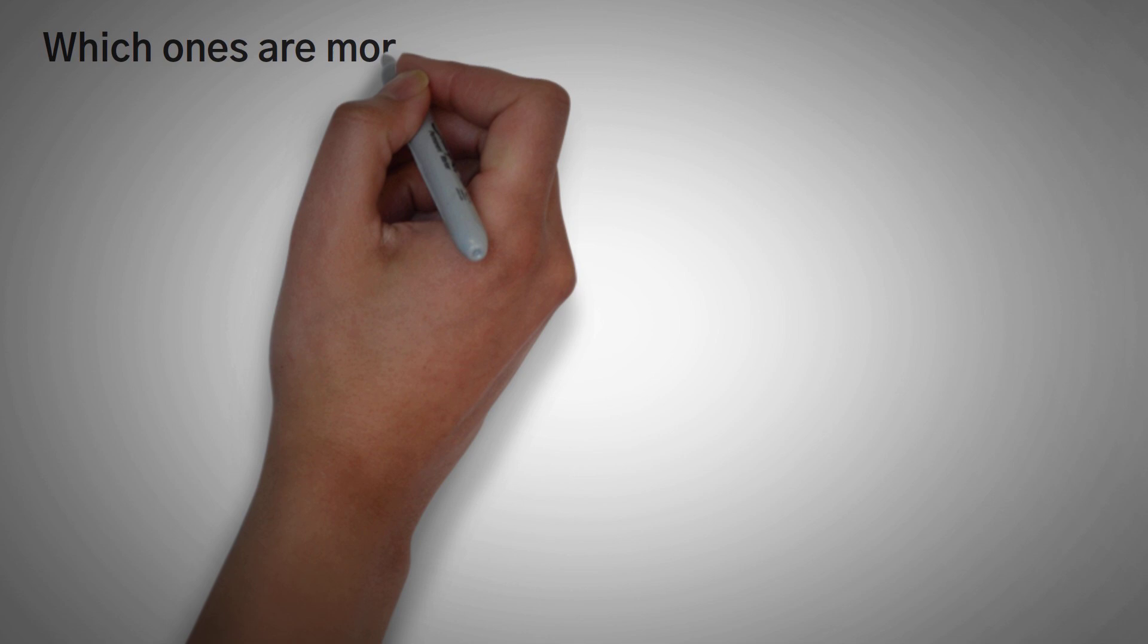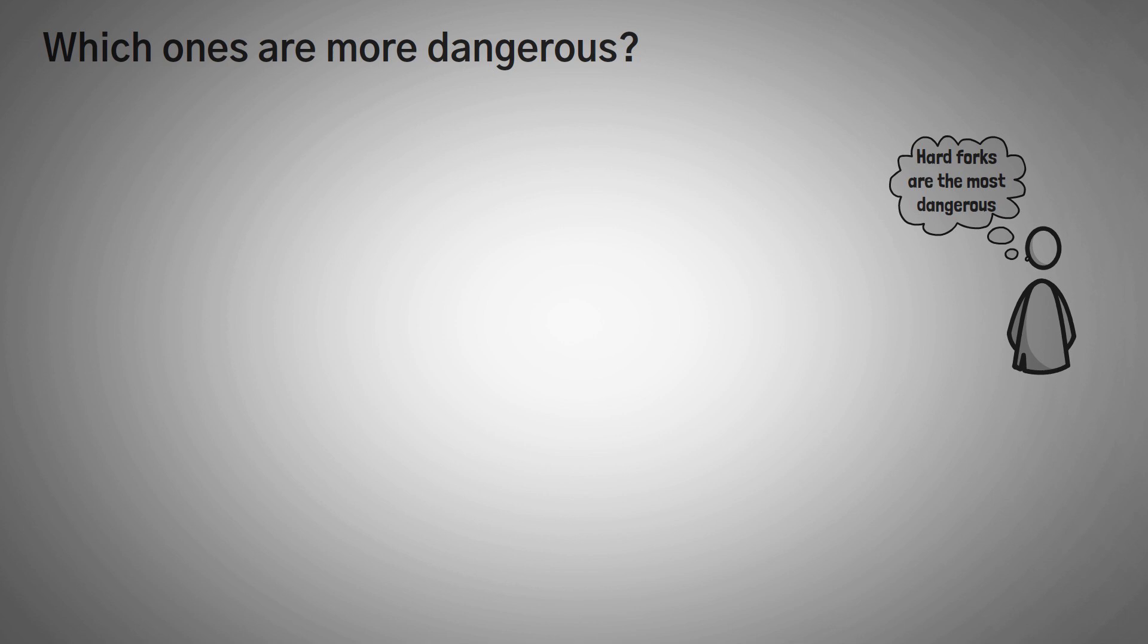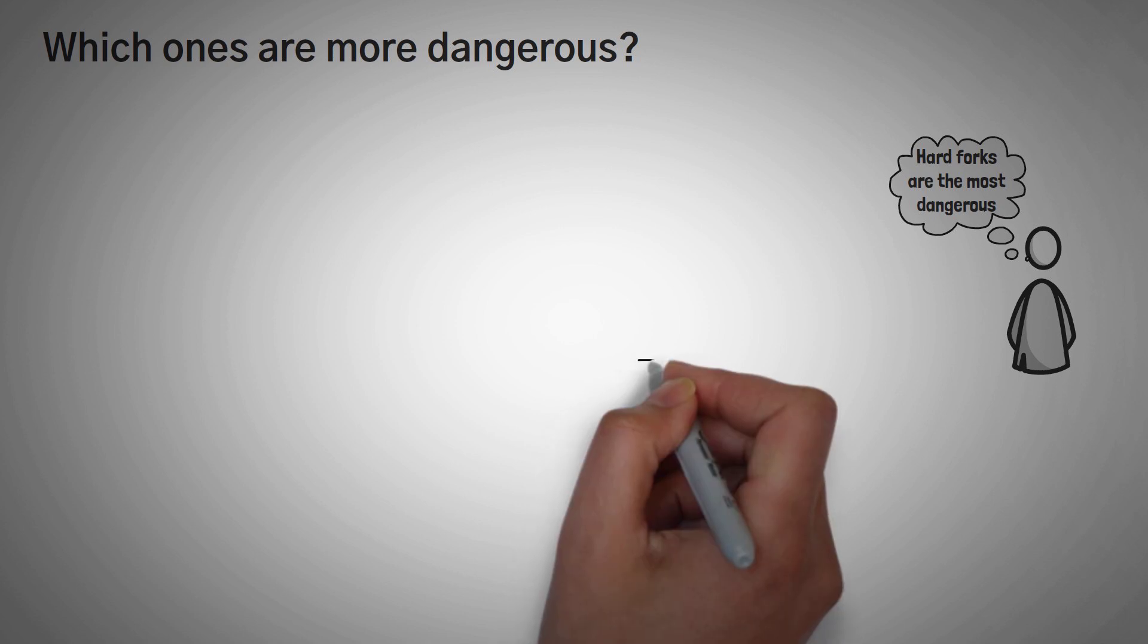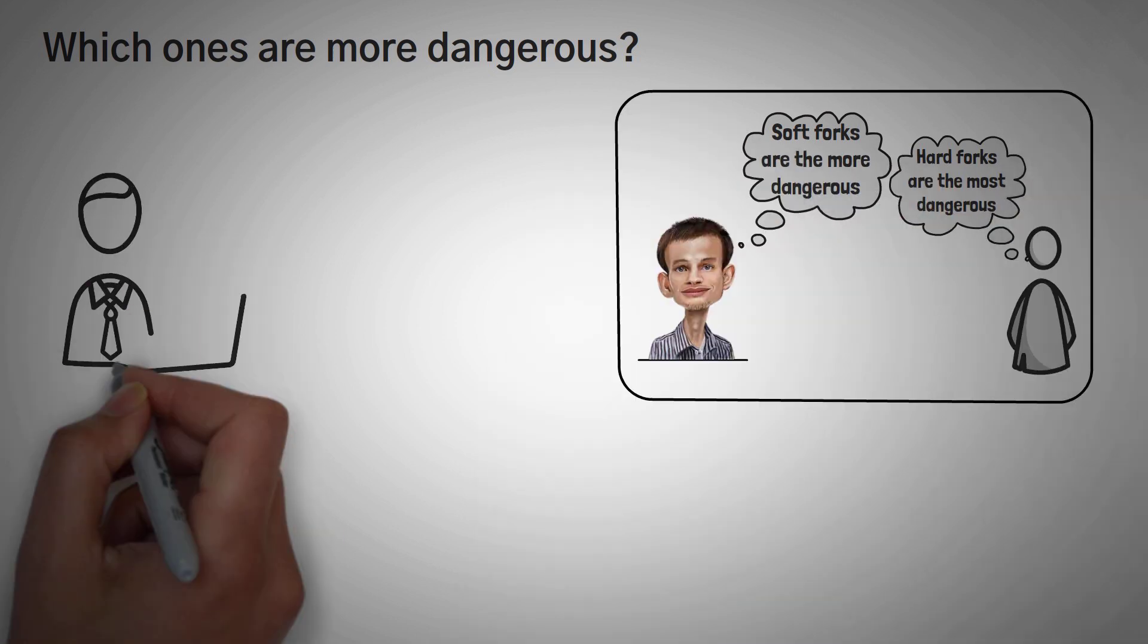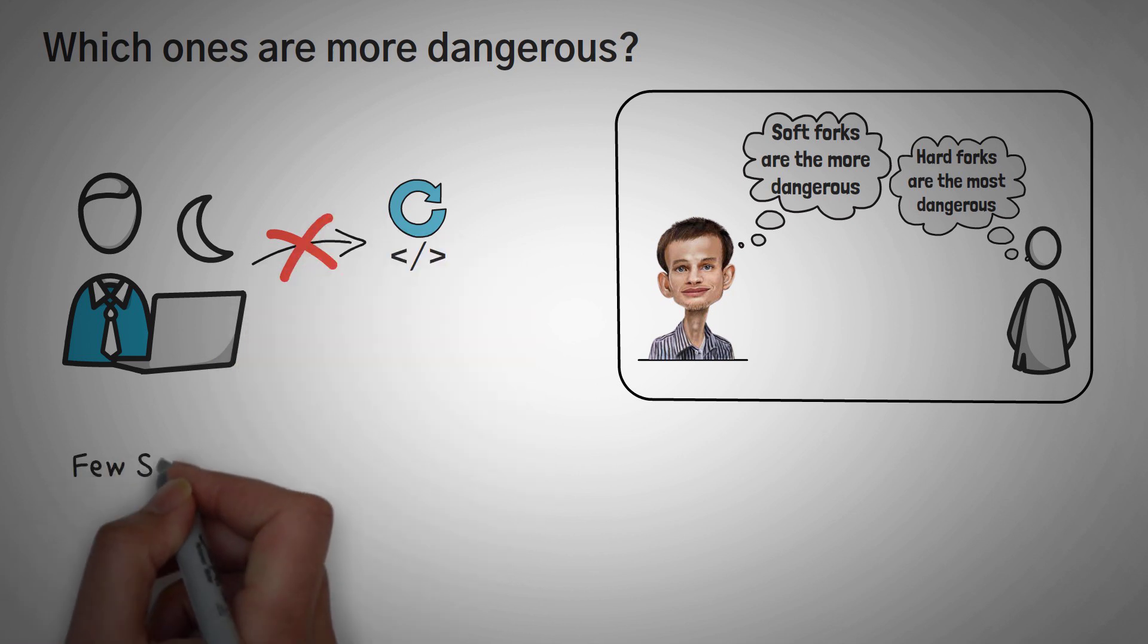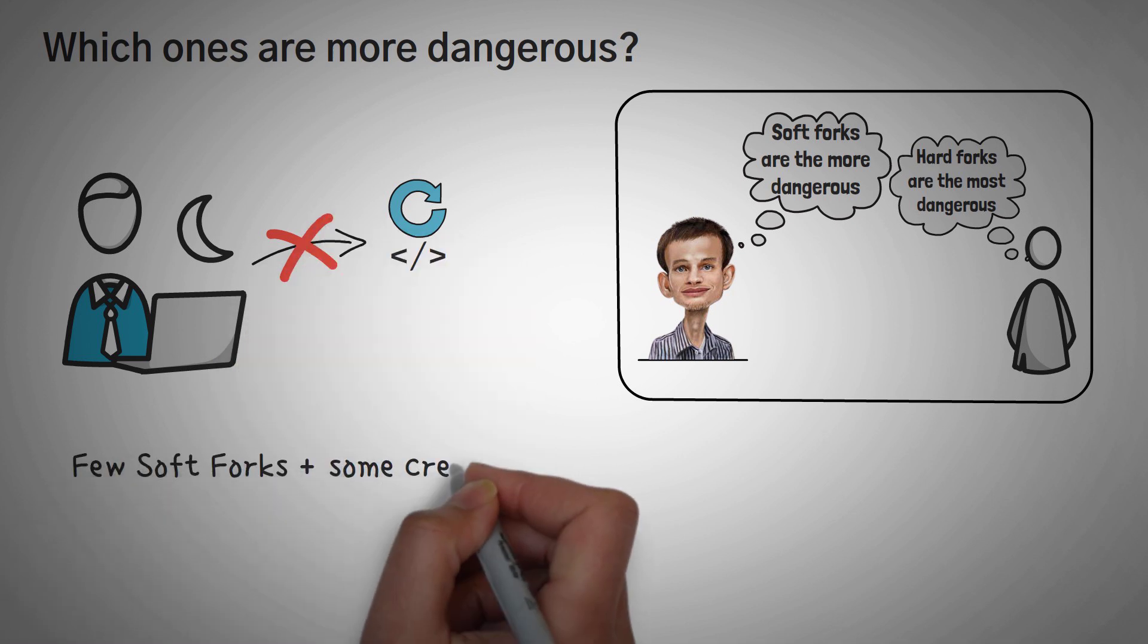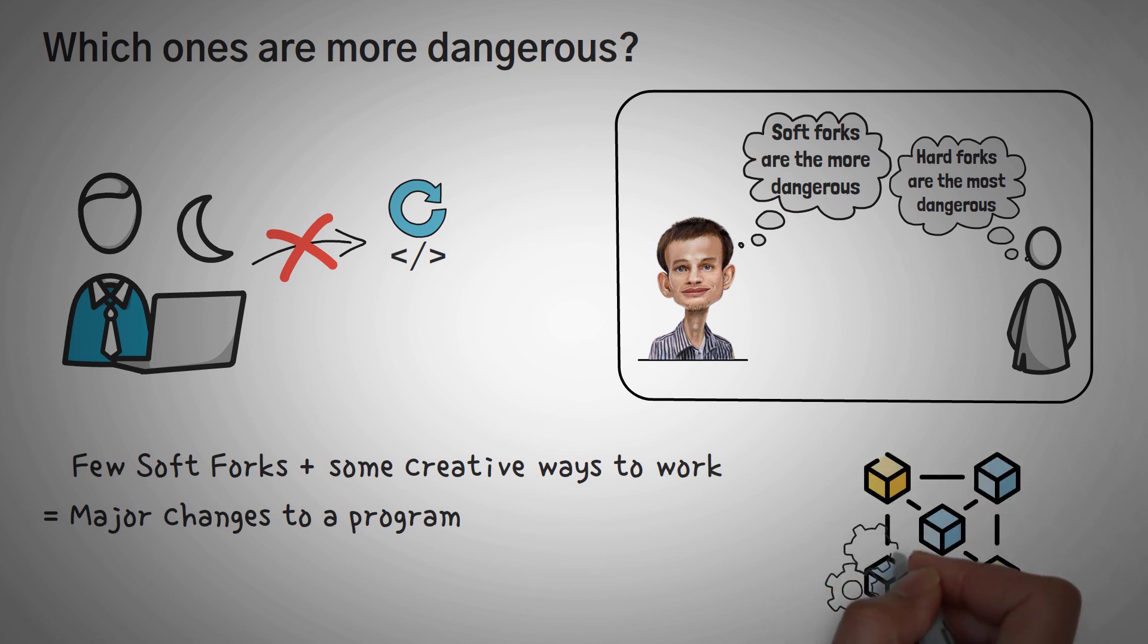Moving on, I kind of want to get into an interesting question, and that is which ones are more dangerous? Now first off, you might think that hard forks are the most dangerous because they have the greatest ability to change a protocol. However, Vitalik says soft forks are actually the more dangerous ones, because you do not have to agree to the change. There is less friction. Using a few soft forks and some creative ways to work without changing too much of the current architecture, you can actually make some major changes to a program. However, you will always be bottlenecked by the fact that you must be confined by how the current blocks work. So, both have a bunch of power.